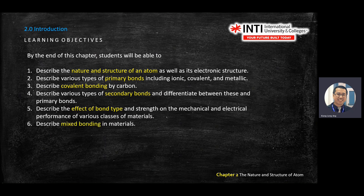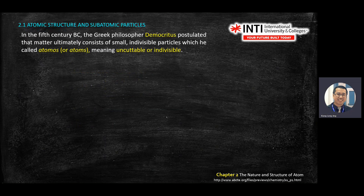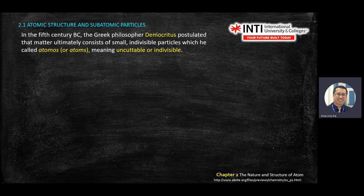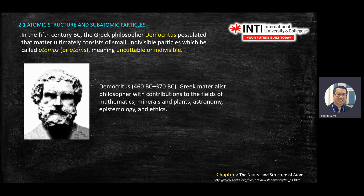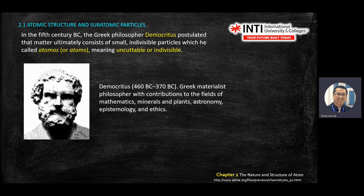Learning objective — you read. So first we look into atomic structure. Some history: who discovered the structure of atoms? Someone called Democritus. He discovered that our material consists of an arrangement of something, and he named that something as an atom.